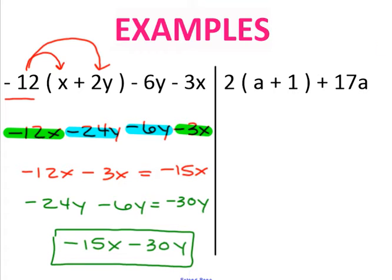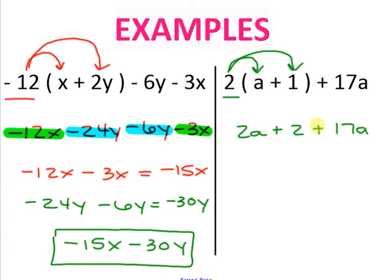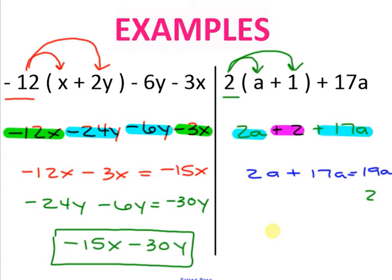Next problem: find your parentheses — they're right here — and your term outside. Distribute: 2 times a is 2a, and 2 times 1 is positive 2. Bring down the rest: plus 17a. Combine like terms: 2a plus 17a equals 19a, and then there's a 2 by itself. Final answer: 19a plus 2.